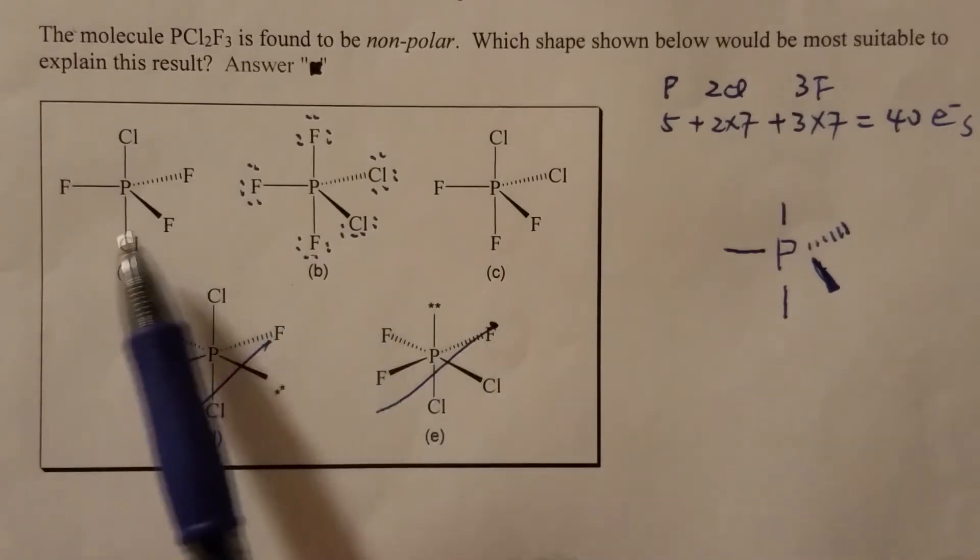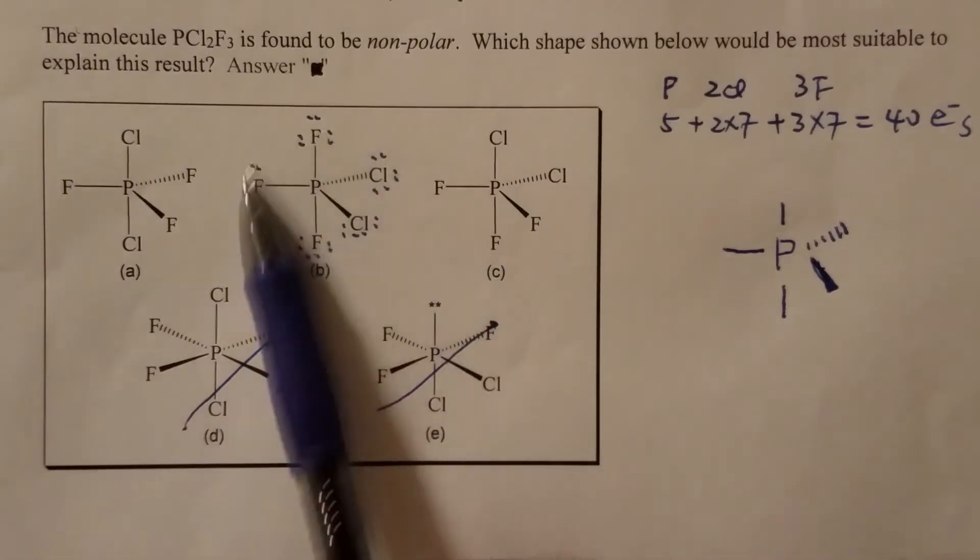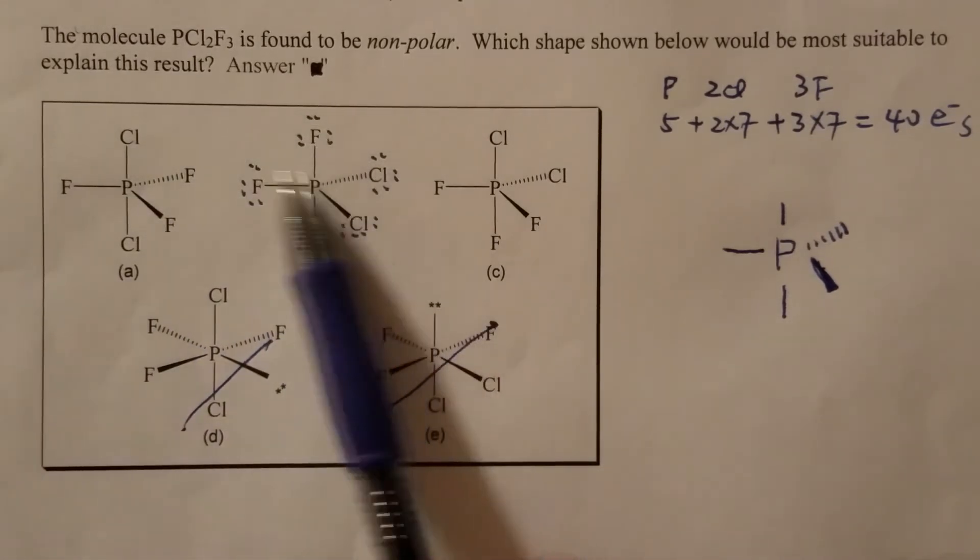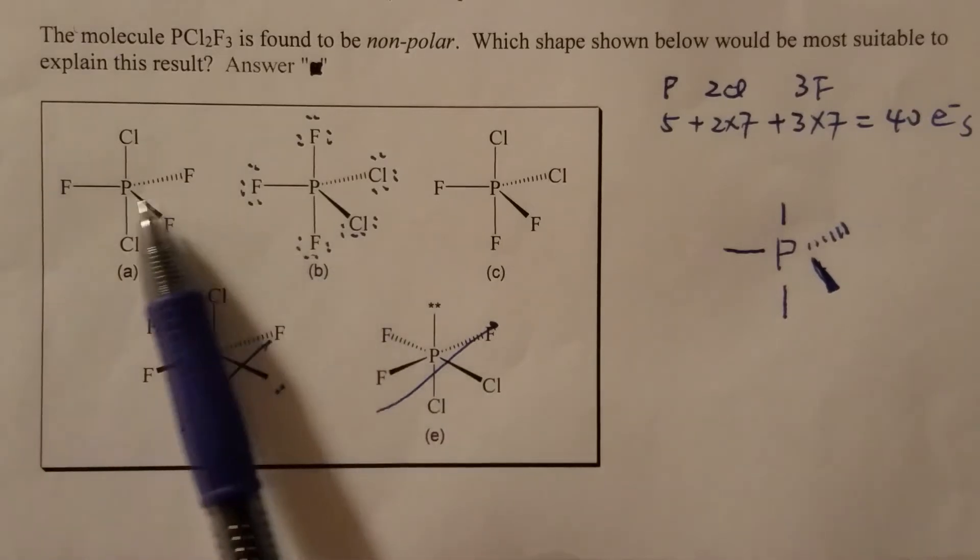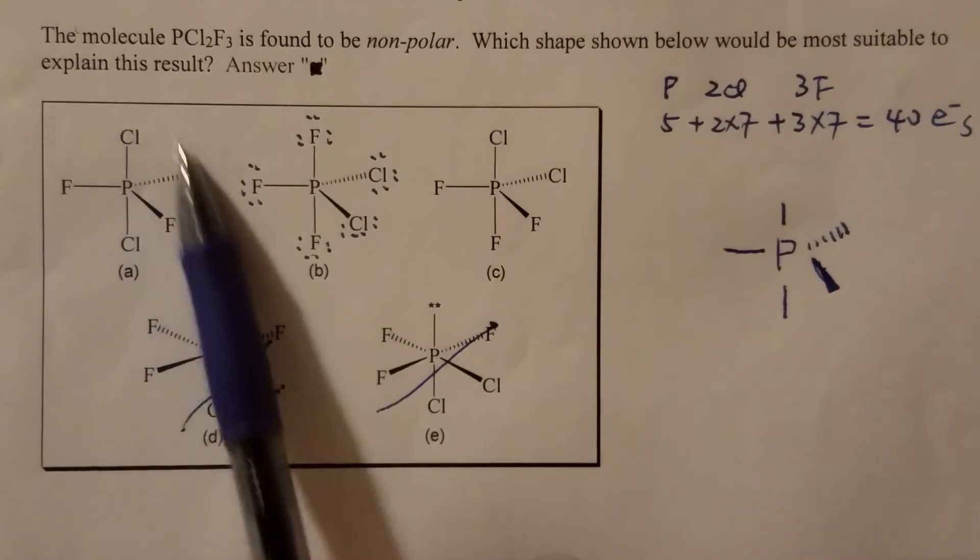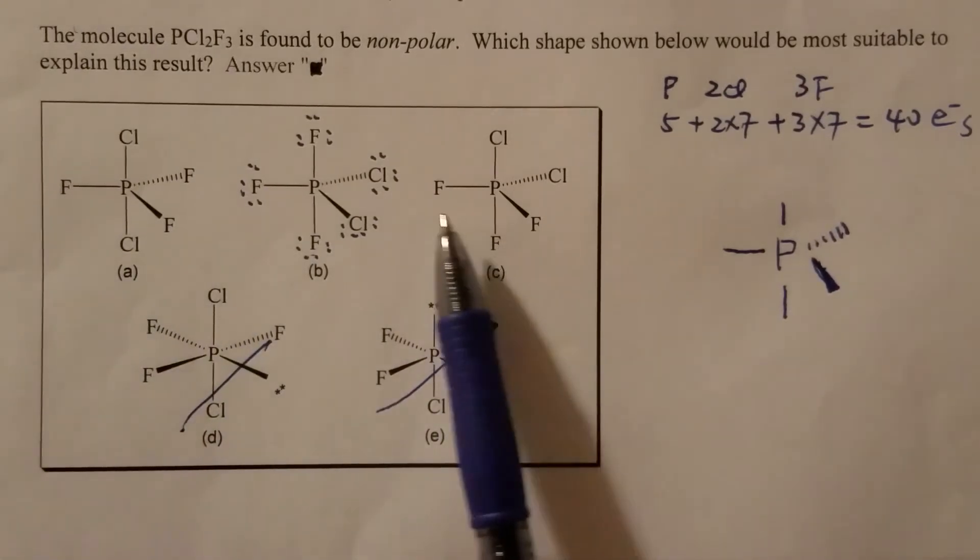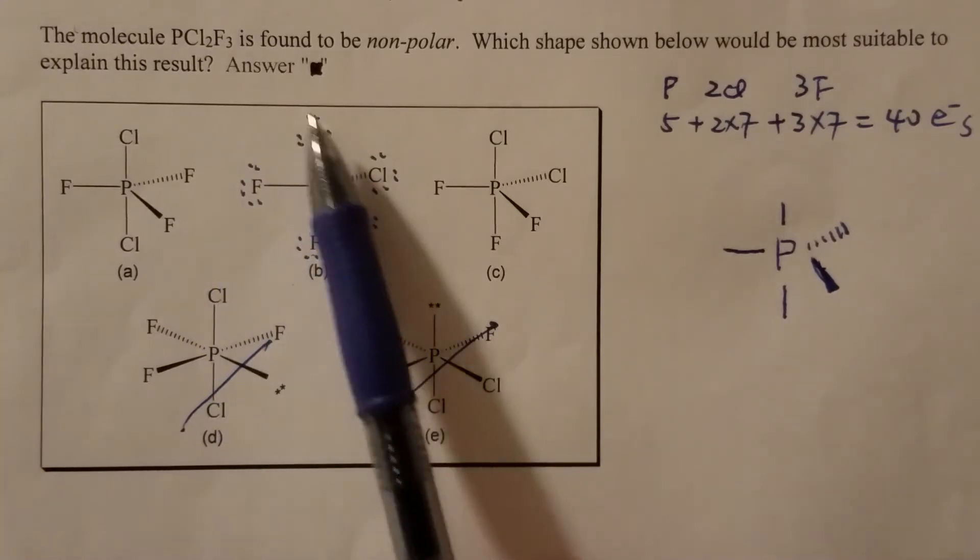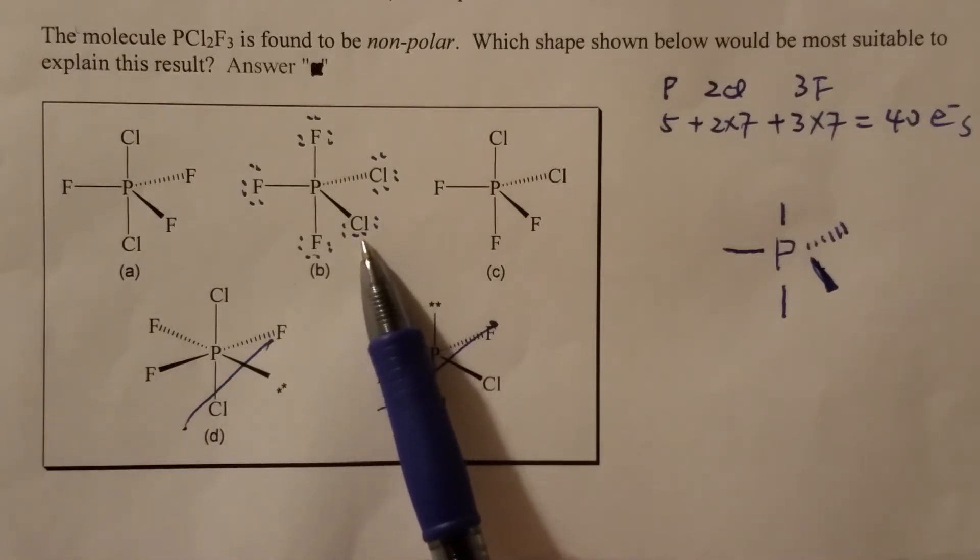So the only question is, which one of the first three is the correct answer? Please note, if the peripheral atoms are all the same, for example, are all chlorines or all fluorines, this molecule will be non-polar. Even though the bonds can be polar bonds, the entire molecule will be unpolar if the surrounding atoms are identical, because this is a symmetrical structure. So that's a trigonal bipyramidal. But since the surrounding atoms are not the same, that approach doesn't help from that perspective.